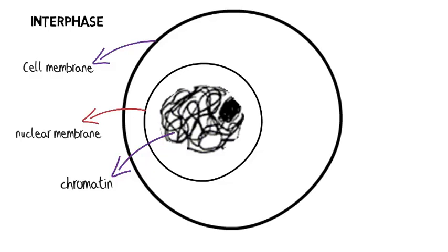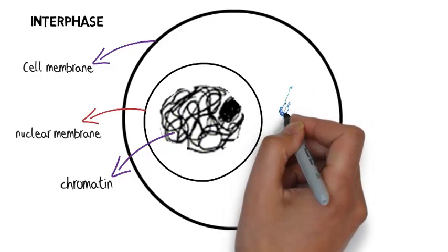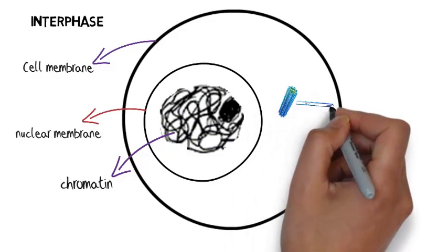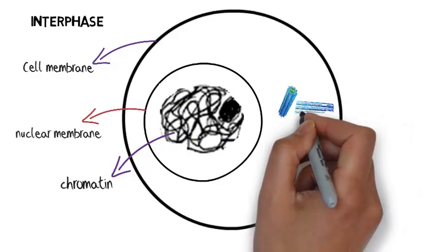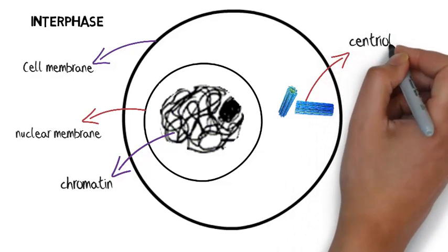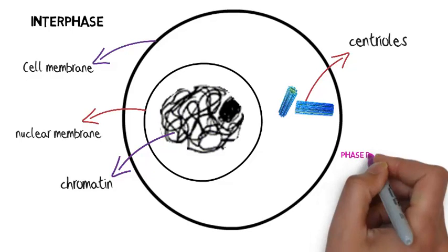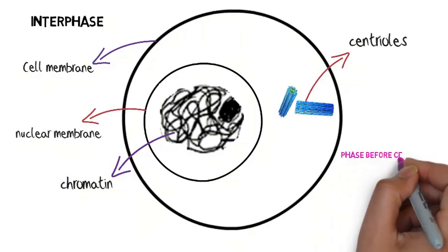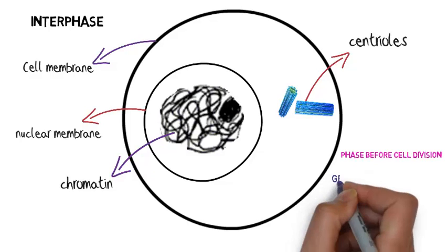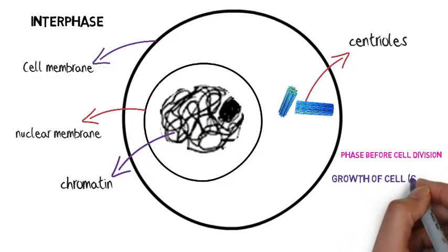The chromatin is all spread out and thread-like, so we can't actually discern the chromosomes in this period of time. The other thing that's been drawn in here, specifically to animal cells — because we're going to look at this mitosis using animal cells — is the centrioles. The centrioles are important in the production of the spindle fibres which run this process. So as it says, interphase is the phase before cell division, before mitosis.